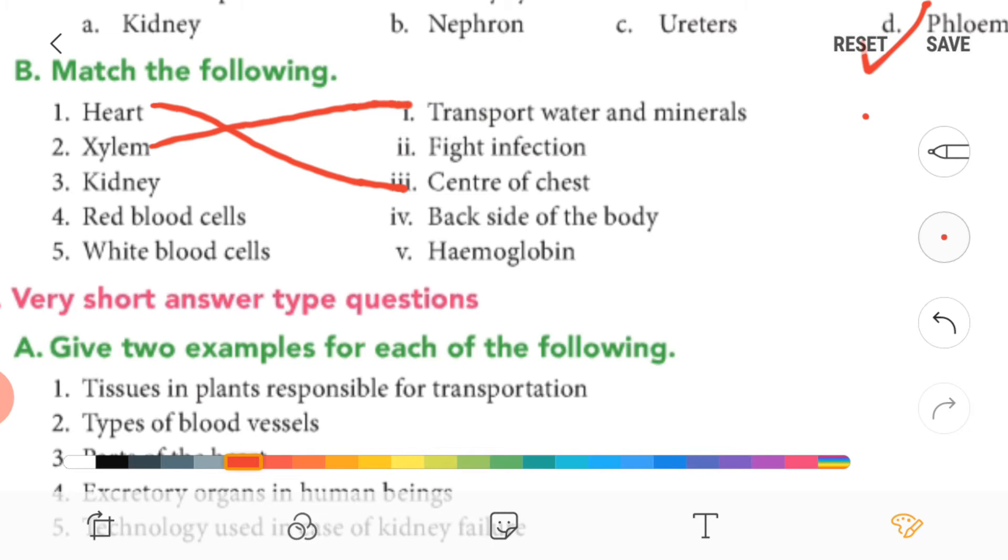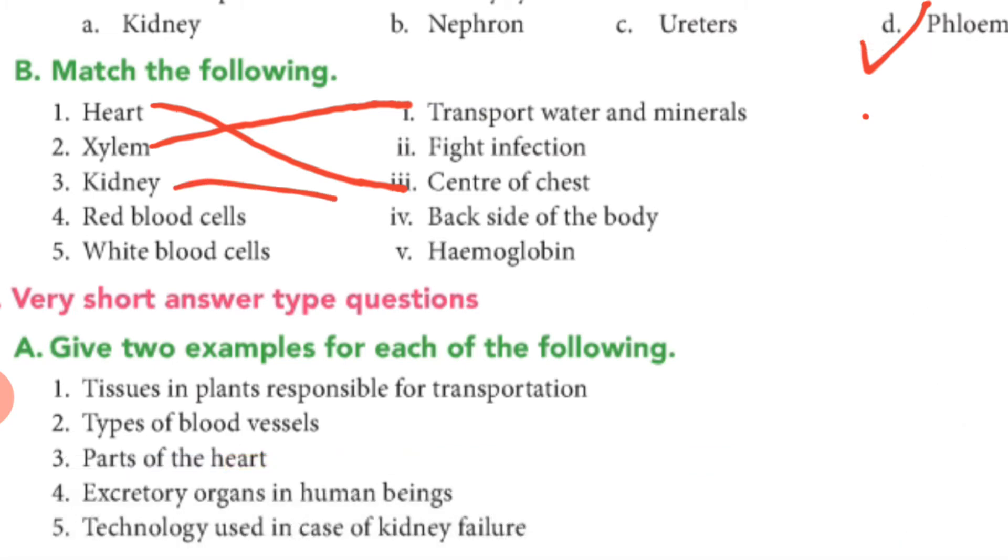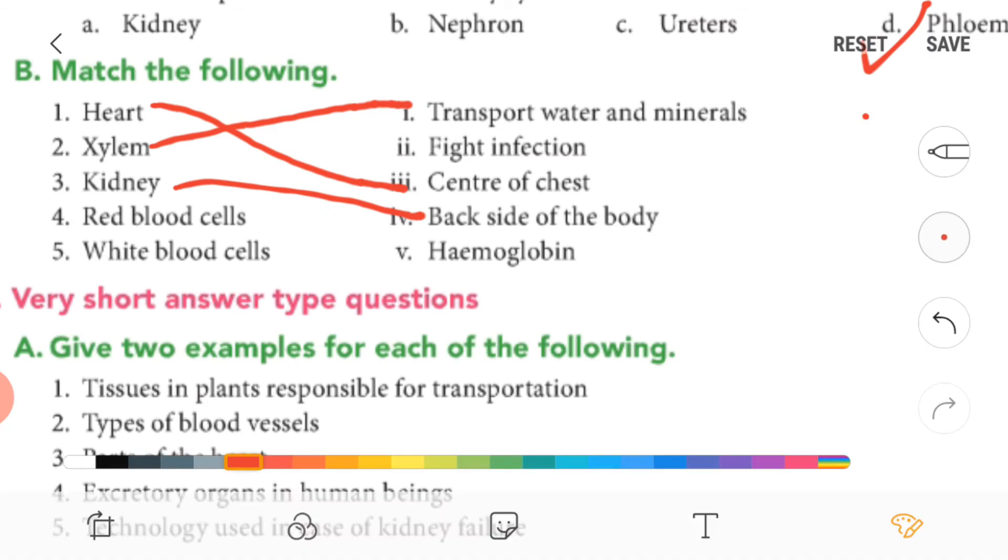Now third one is kidney. Kidney is present at the back side of the body, near waist, right? So answer is four.